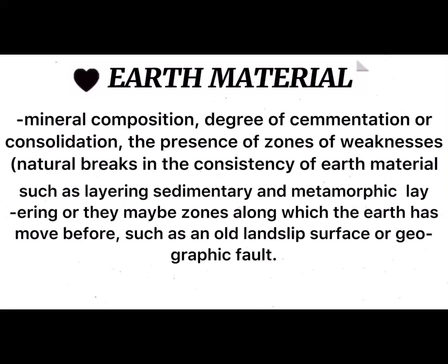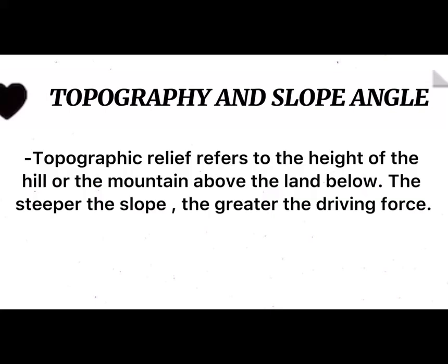Earth materials include minerals, rocks, soil, and water. These are naturally occurring materials found on earth that constitute the raw materials upon which our global society exists. Earth materials are vital resources that provide the basic components for life, agriculture, and industry. Topography and slope angle: topographic relief refers to the height of a hill or mountain above the land below. The steeper the slope, the greater the driving force. Topography describes the shape and relief of the land and measures the evaluation of slope and percent change in elevation over a certain distance.